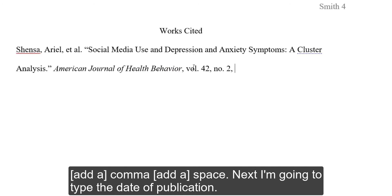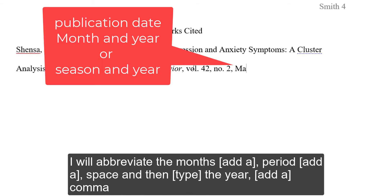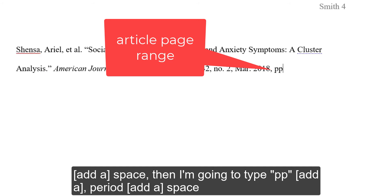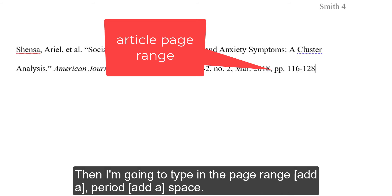Type the volume number, comma, then 'no.' — short for issue number — period, space, then the issue number, comma, space. Next, type the date of publication, abbreviating the month, period, space, then the year, comma, space. Then type 'pp.' — which stands for page range or pages — period, space, then the page range, period, space.